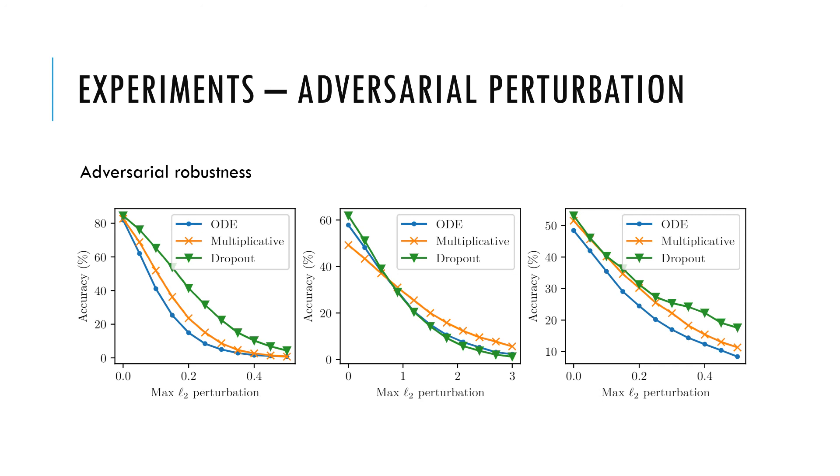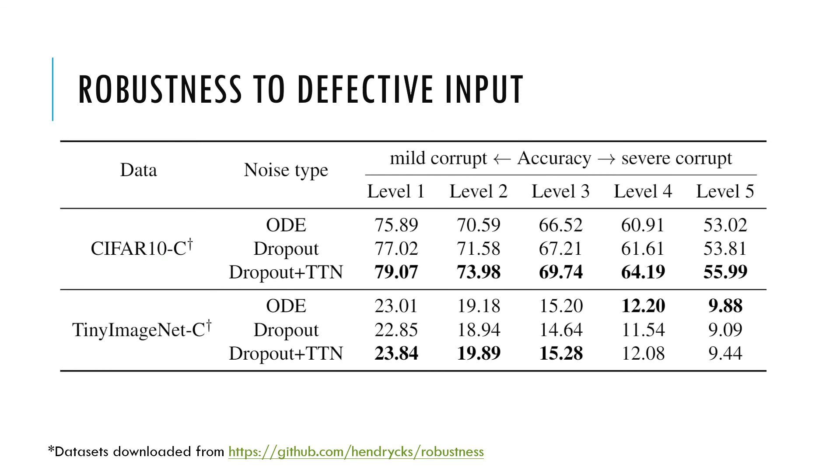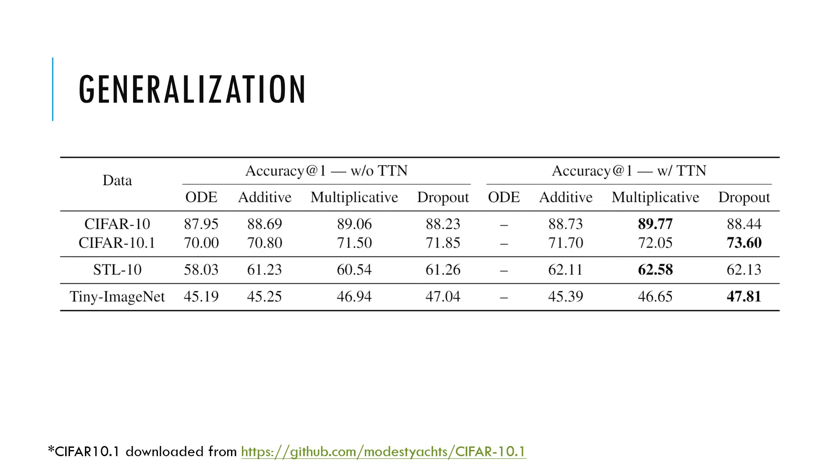In the following experiment, we test the non-adversarial perturbation consisting of some image corruption benchmarks. We again see our Neural SDE with dropout noise outperforms the noise-free ODE model.